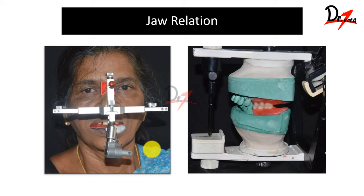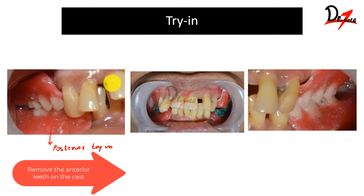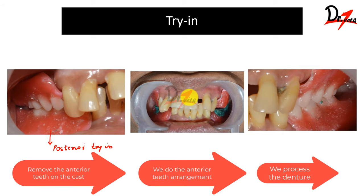For jaw relation we are dealing with the posterior teeth only and not touching the anterior teeth, so the patient's aesthetics are still maintained. This is the posterior try-in. One disadvantage of the immediate denture is that anterior try-in is not possible — since when the patient comes back we will be extracting all the anterior teeth and giving the denture, there is no time for an anterior try-in.